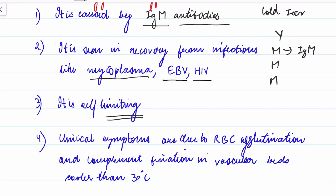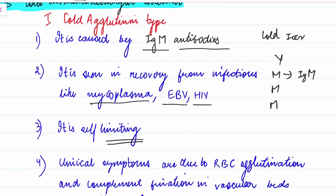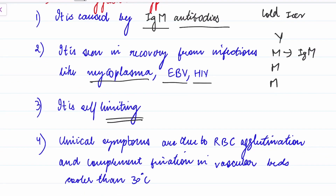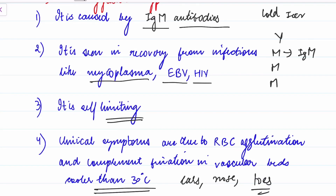Cold agglutinin disease is a self-limiting disease with not much destruction of RBCs. Clinical symptoms occur when antibodies bind to RBCs in vascular beds cooler than 30 degrees Celsius.